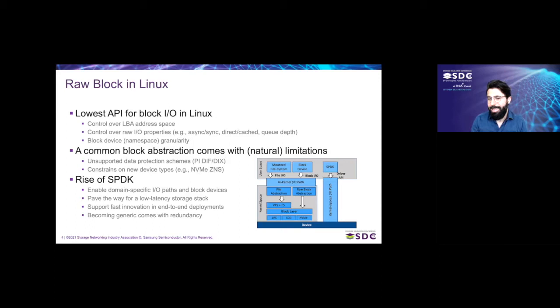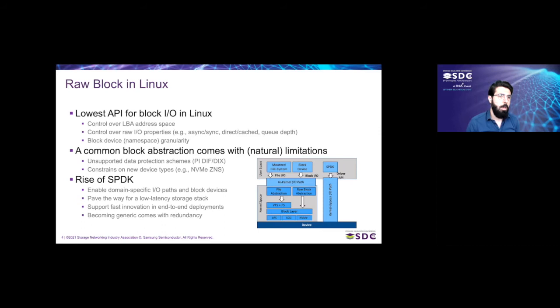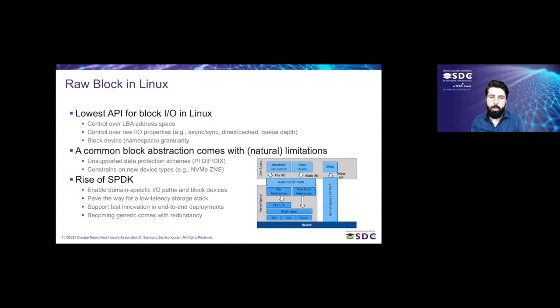The block layer is fantastic, but when you're building this common block abstraction, it comes with some natural limitations. Just to name a few — there are data protection schemes like protection information and DIF/DIX combinations that are not supported. Something very used in enterprise environments, the 4K plus 64-byte contiguous buffer, is something the block layer does not support today. So when people plug in such devices, they don't see the block device come up, or sometimes even worse, the block device comes up with capacity zero, which means you cannot use it.